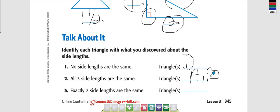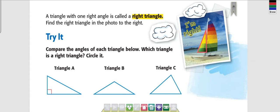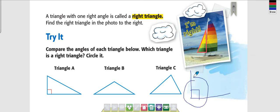A triangle with one right angle is called a right triangle, and how do we know that? Because in the corner of a right triangle there is going to be a little square box — that tells you that triangle is a right triangle.